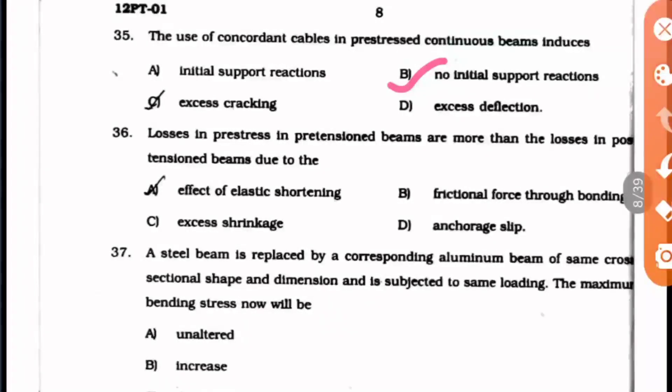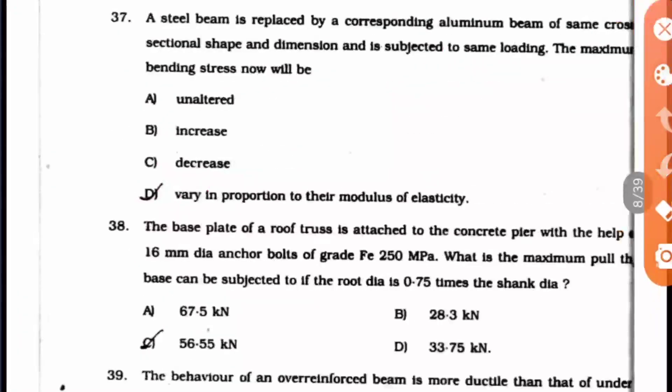Answer A is the right answer: effect of elastic shortening, which occurs only in pretension beams. Question 37: A steel beam is replaced by a corresponding aluminum beam of the same cross-sectional shape and dimension, subjected to the same loading. The maximum bending stress is unaltered.